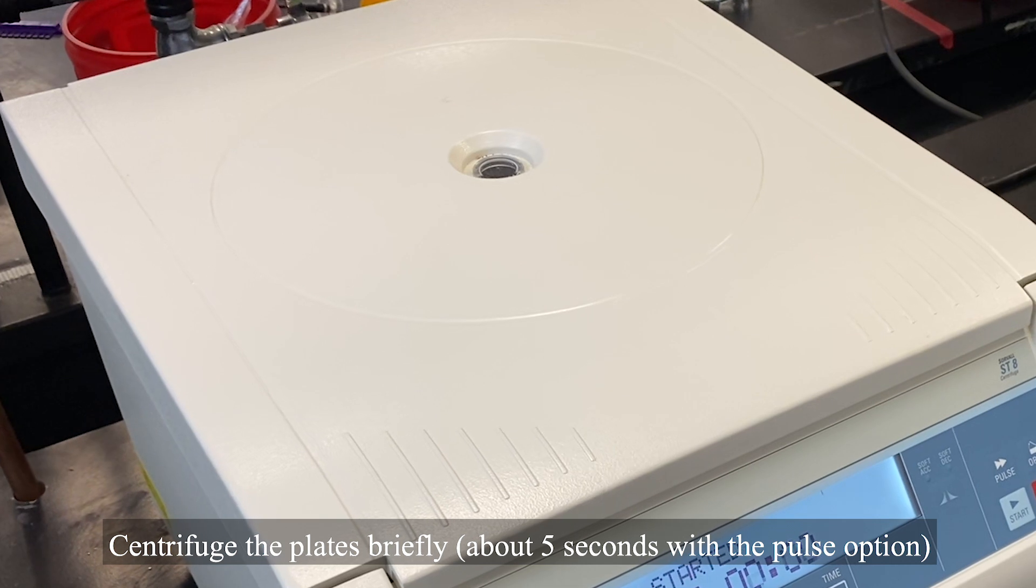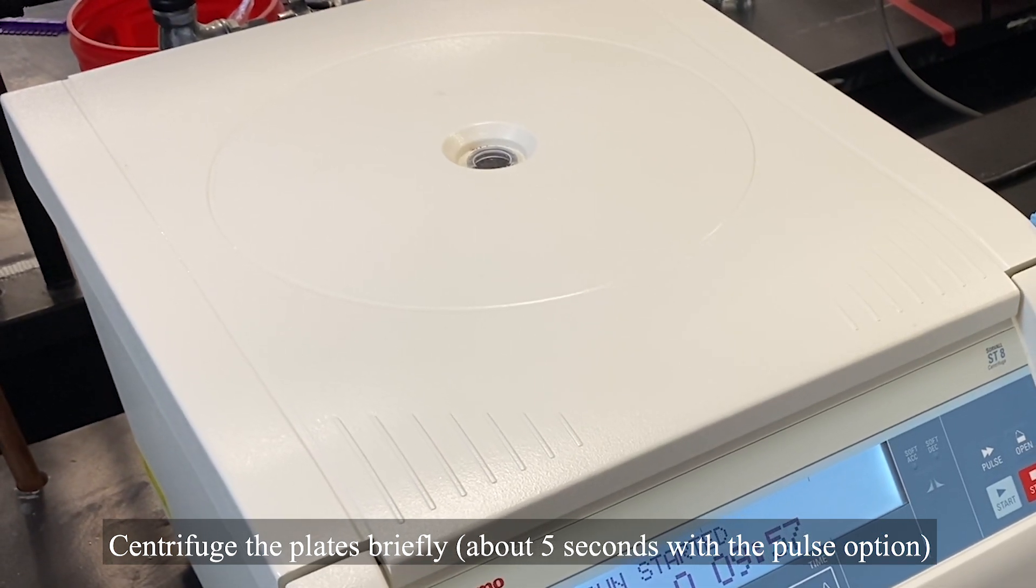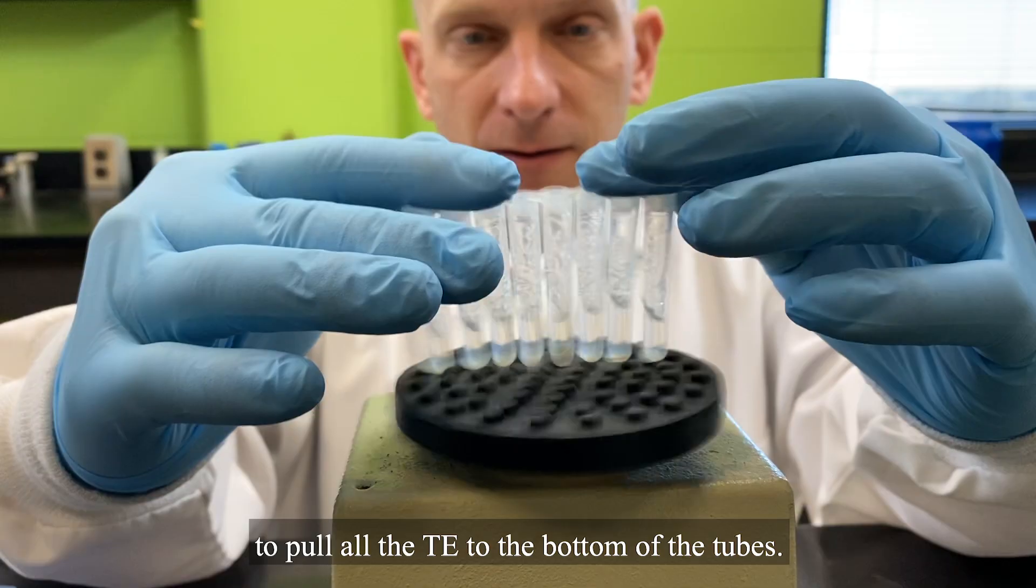Centrifuge the plates briefly, about 5 seconds with the pulse option, to pull all the TE to the bottom of the tubes.